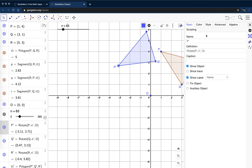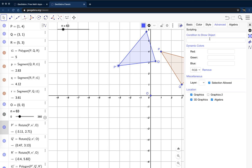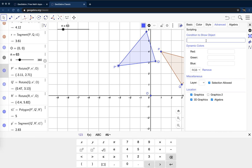And here in the Settings pane, I'm going to go to Advanced and say Conditions to show the object. I'm going to type N greater than zero. And when I do that, that means that the object will only show when N is greater than zero.